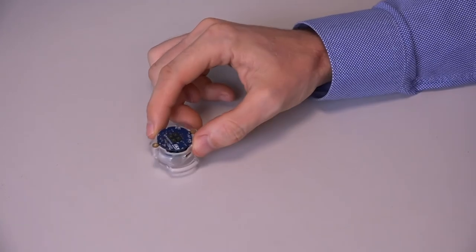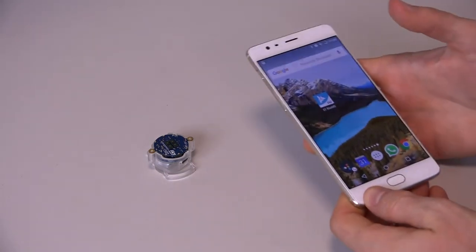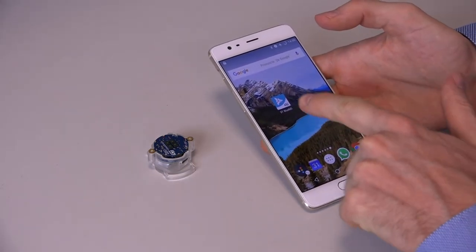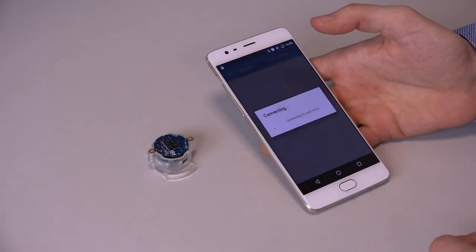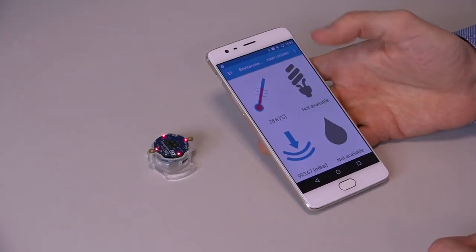The BlueCoin will start blinking, meaning that it's waiting for connection. We can now open the ST BlueMS app, look for the device and connect to it. We will see the sensor data displayed on the phone. Thanks for watching this video. If you want more information about the BlueCoin kit or the related software, go to st.com slash BlueCoin.